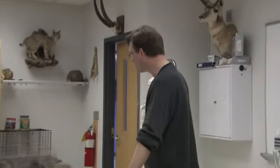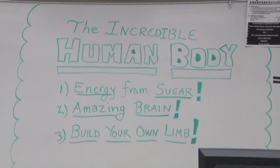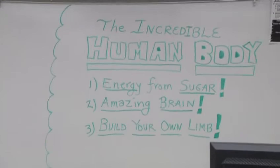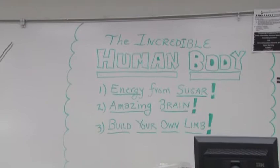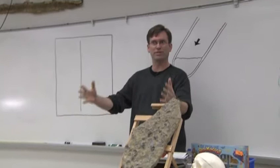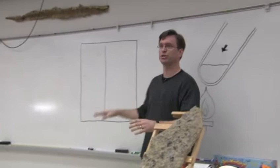Thank you, Matt. You guys can call me Mr. Paul. If you look over on the board, we have a schedule today. We're going to do three different activities based on the human body. The first one is energy from sugar. Second is The Amazing Brain, and we'll do some activities with that. Third is build your own limb — meaning arm and leg. We're going to work with the skeletal system, put bones together, and build our own arm and leg.